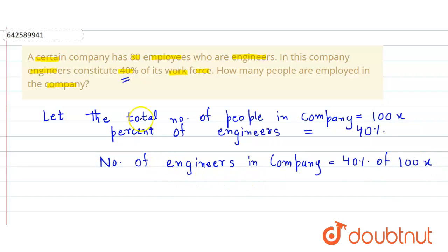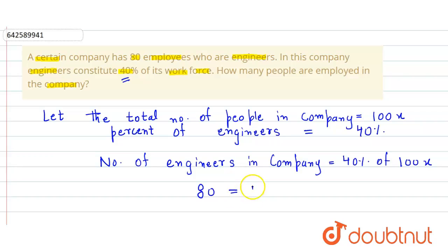But it is given in the question that there are 80 employees who are engineers. So the number of engineers in the company is given to be 80. Now we equate 80 to this expression, so we get 80 is equal to 40 percent of 100x.